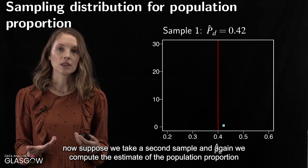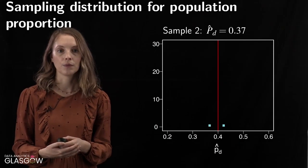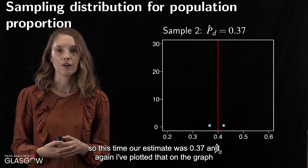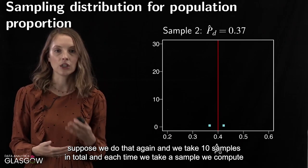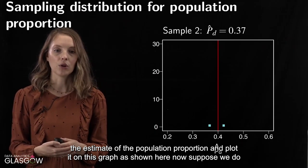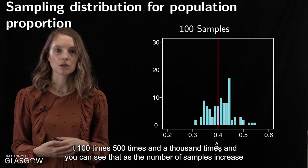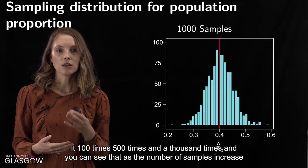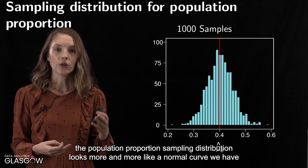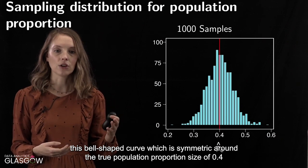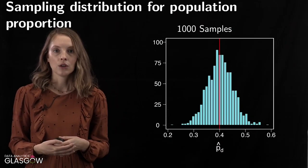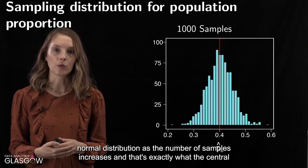Taking a second sample gives an estimate of 0.37, again plotted on the graph. If we take 10 samples in total, computing the estimate each time and plotting it, then 100, 500, and 1000 samples, we can see that as the number of samples increases, the sampling distribution of the population proportion looks more and more like a normal curve — a bell-shaped curve symmetric around the true population proportion of 0.4. This is exactly what the central limit theorem tells us.